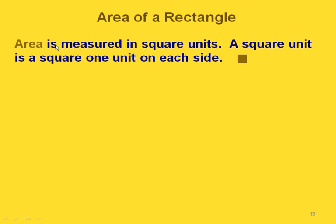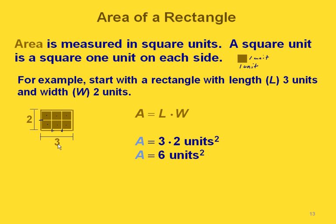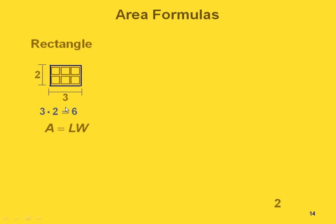Area is measured in square units — a square unit is a square with one unit on each side. If we start with a rectangle that has a length of three units and a width of two units, we can separate the sides into individual units and count the squares inside. There are six squares, and another way to get six is to multiply two by three. So the area for a rectangle is just the length times the width.